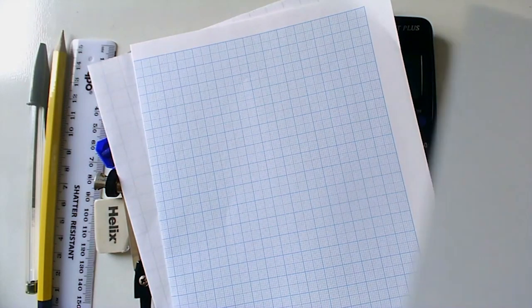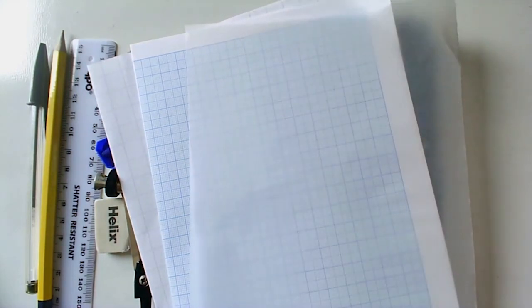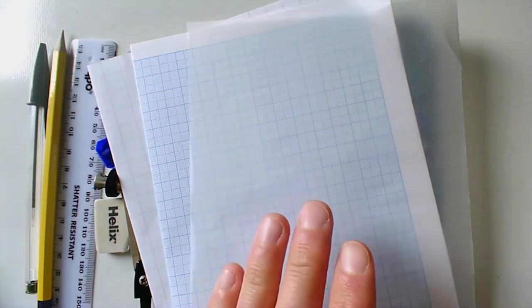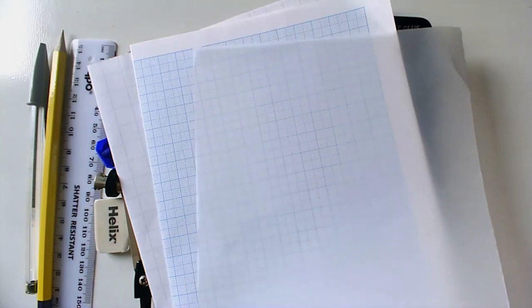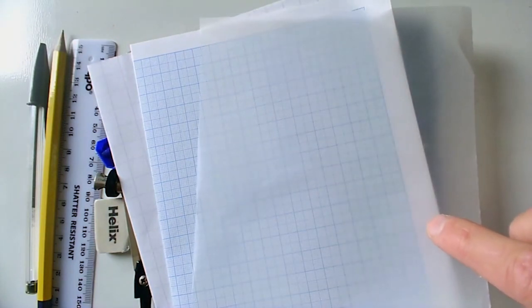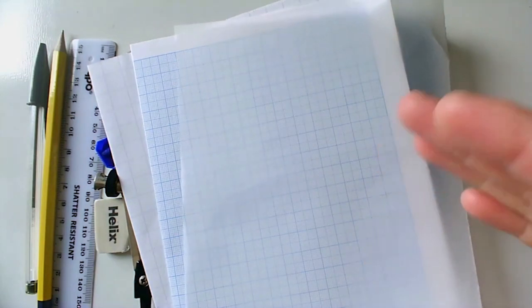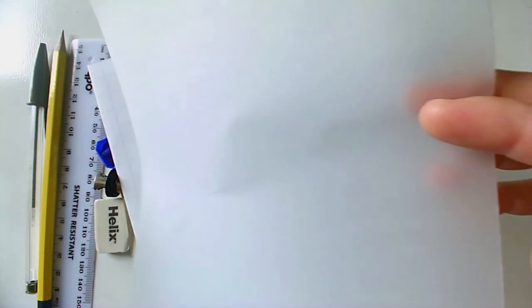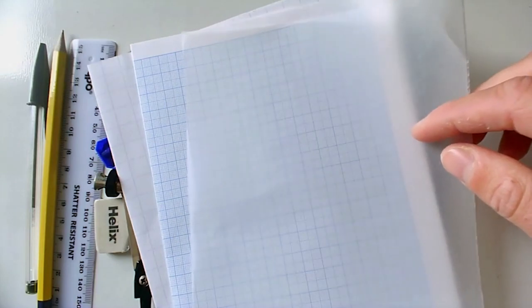The final type of paper that they should have at home is tracing paper which is useful for rotations, reflections and any of the transformations. A quick tip: if you can't get your hands on tracing paper you've probably got some grease proof paper at home in your baking supplies which is perfectly usable as tracing paper as well.